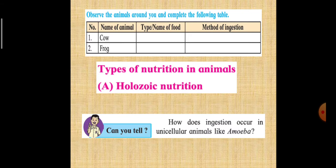Observe the animals around you and complete the following table: name of animal, type or name of food and method of ingestion. This one is an easier one. Try completing the table on your own.